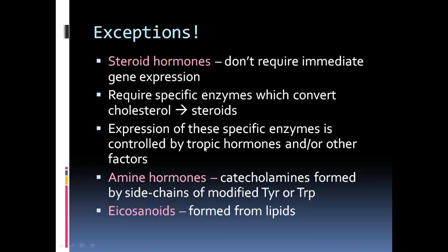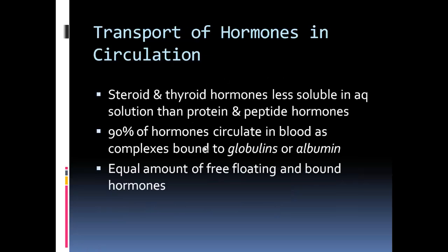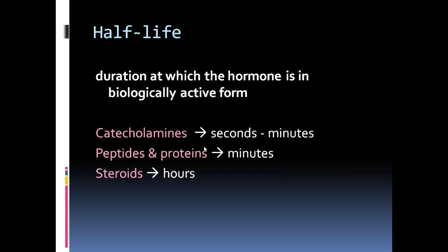Transport of hormones in circulation: steroid and thyroid hormones are less soluble in aqueous solution than protein and peptide hormones. 90% of the hormones circulate in blood as complexes bound to globulins or albumin. Regarding half-life — the duration at which the hormone is in biologically active form — catecholamines have a half-life of seconds to minutes. Peptides and proteins have a half-life of about a minute, and steroids are the longest, with a half-life of hours.